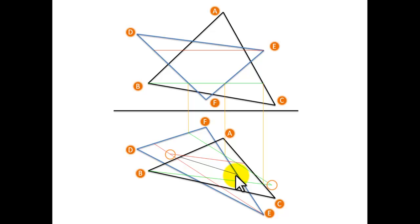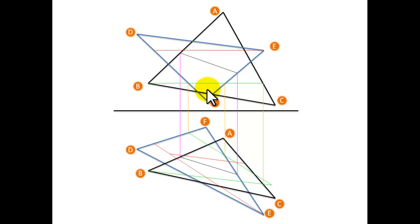Now we have got the plan. We are going to bring the points up to our elevation and join them together. That is how we get the line of intersection between two planes when you have no points on the line of intersection.